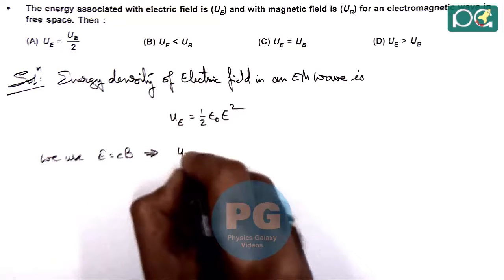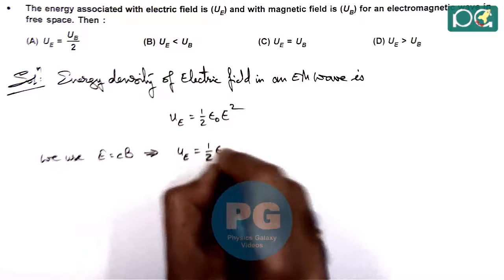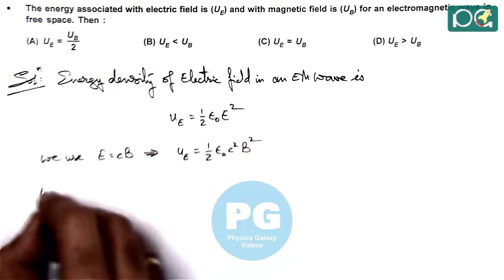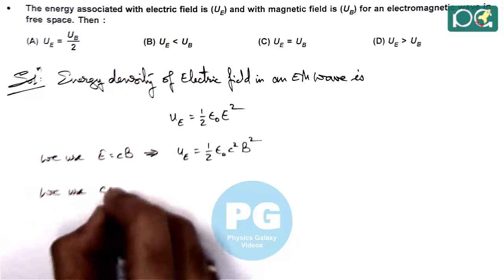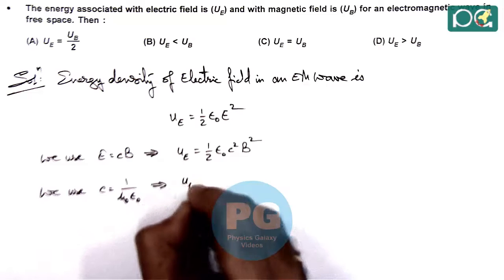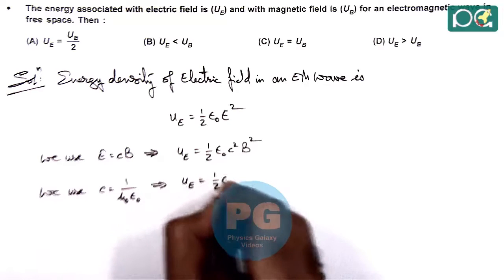Also we use the speed of light as 1 by square root of mu-not epsilon-not. So this gives Ue is equal to half epsilon-not, this is 1 by mu-not epsilon-not multiplied by B square.